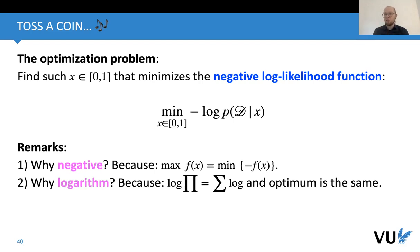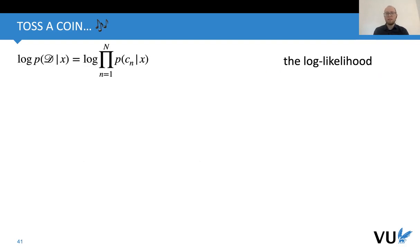Take a look again at this optimization problem. We're looking for such x that minimizes the negative log-likelihood. Of course, first we need to calculate the log-likelihood function. We will do it step by step. So first we take logarithms, and now the product changes to the sum.